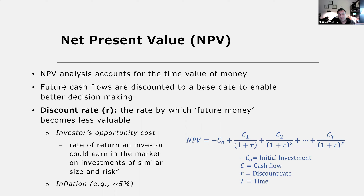The equation for net present value is shown here. It equals the initial investment plus the cash flow during time period one divided by one plus the discount rate R, plus the cash flow for year two divided by (1+R) squared, plus C3 divided by (1+R) to the third, and so on until we reach the final time period.